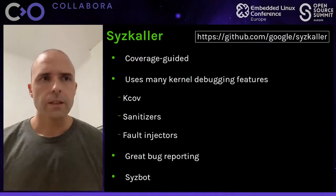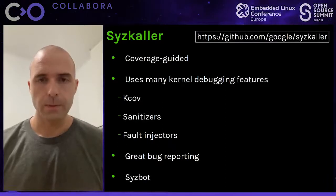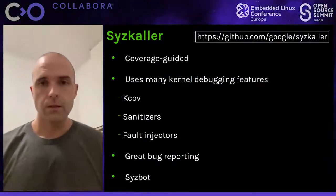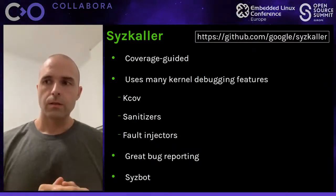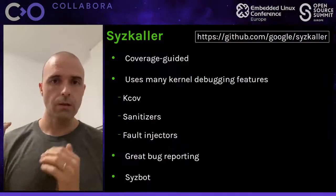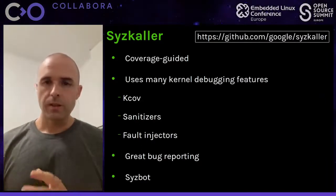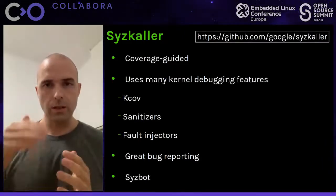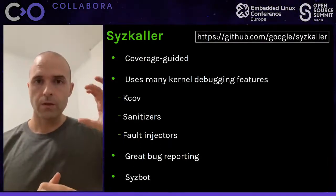Additionally, Syzkaller can also use the kernel fault injectors, such as failslab or fault-futex, to make the kernel introduce controlled faults during a test. What Syzkaller does is to selectively enable these fault injectors so that it covers even more code that would normally only be executed when one of these faults happen naturally. Normally there are very few chances of reaching this deep code that checks error conditions, and fault injectors make code coverage of these blocks much easier.